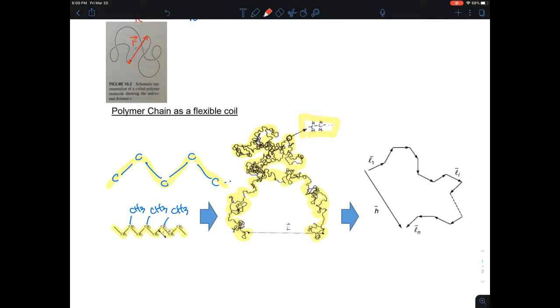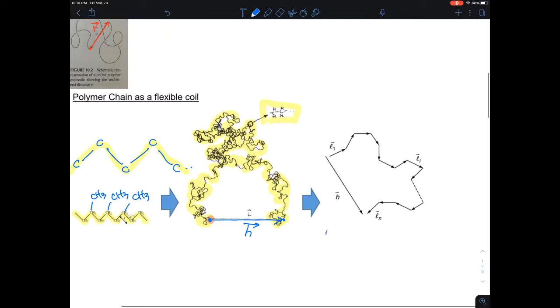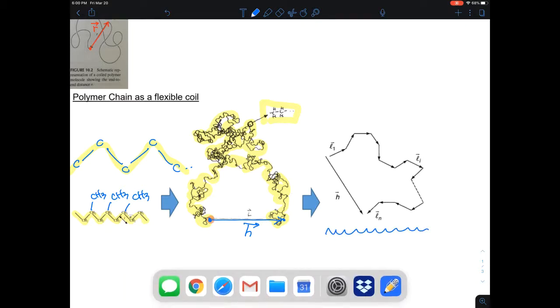And then, essentially, from the beginning here, till the end, we can draw the vectors. And that's essentially vector H. And this is the most kind of simplified picture of the vector that you can see here.